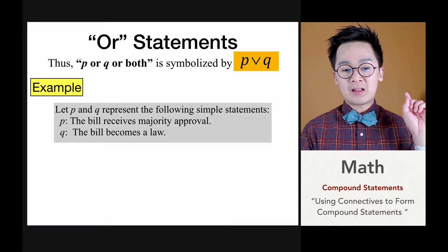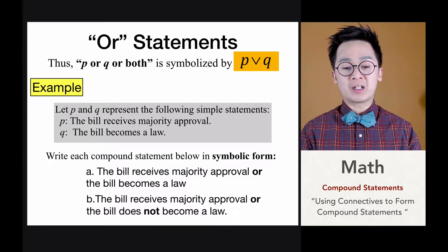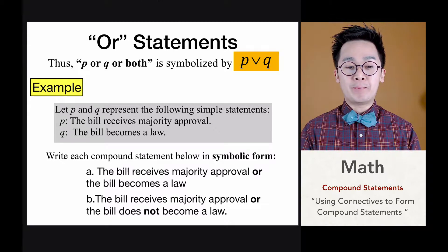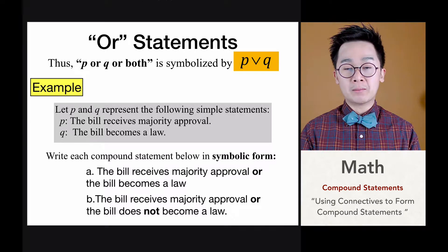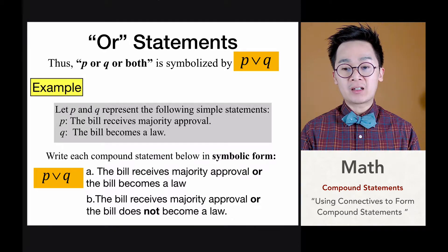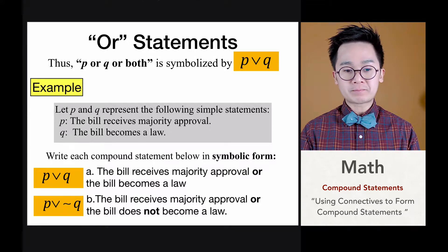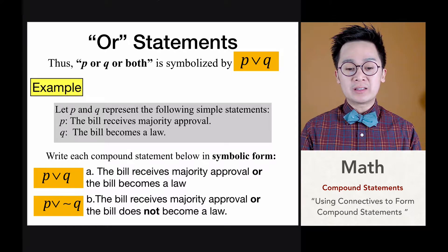Now we have two new statements: statement P is 'the bill receives majority approval' and statement Q is 'the bill becomes a law.' For the first compound statement, 'the bill receives majority approval OR the bill becomes a law' is transformed into P ∨ Q. For the second, 'the bill receives majority approval OR the bill does NOT become a law' is written as P ∨ ¬Q.